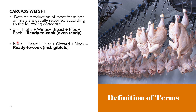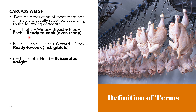Letter B includes all Letter A parts plus the heart, liver, gizzard, and neck — also known as the giblets of the bird. Letter C includes all of Letter B plus the feet and the head, and these are collectively known as the eviscerated weight of the bird.